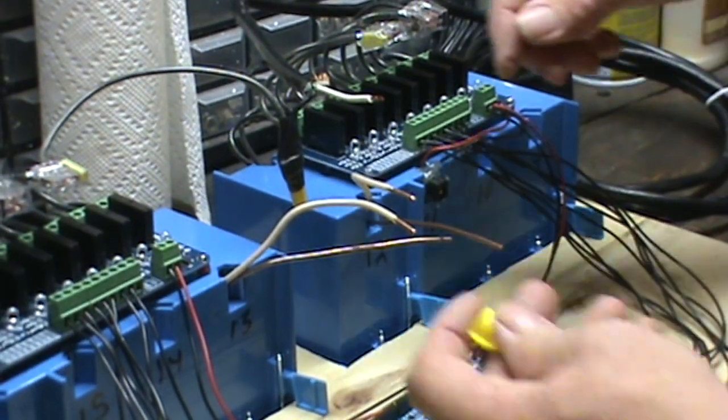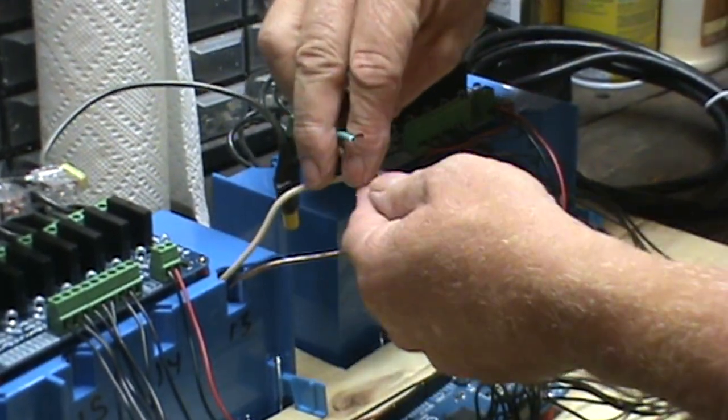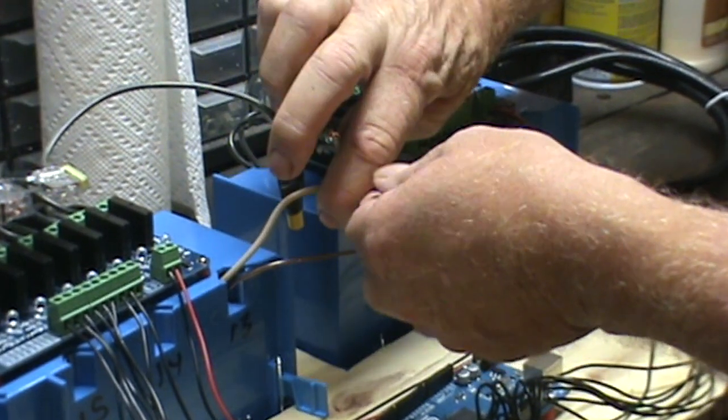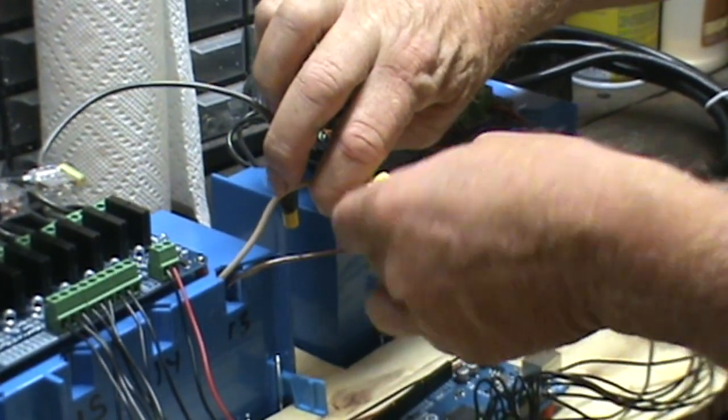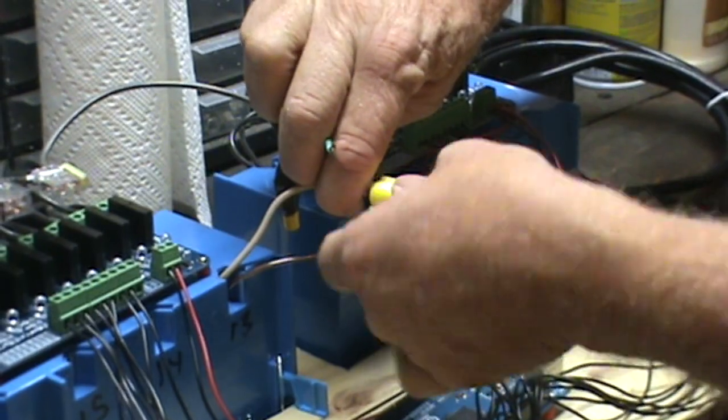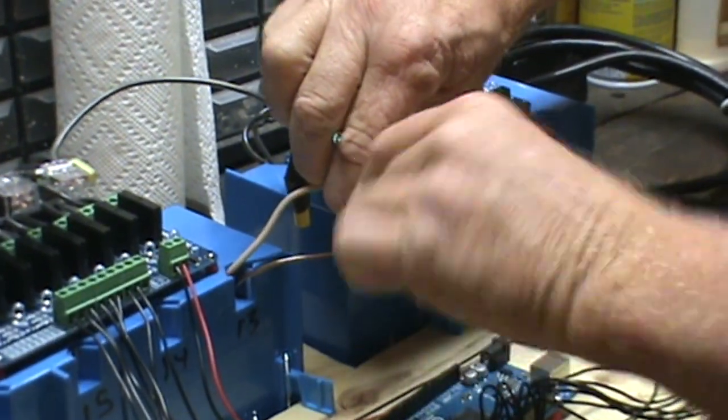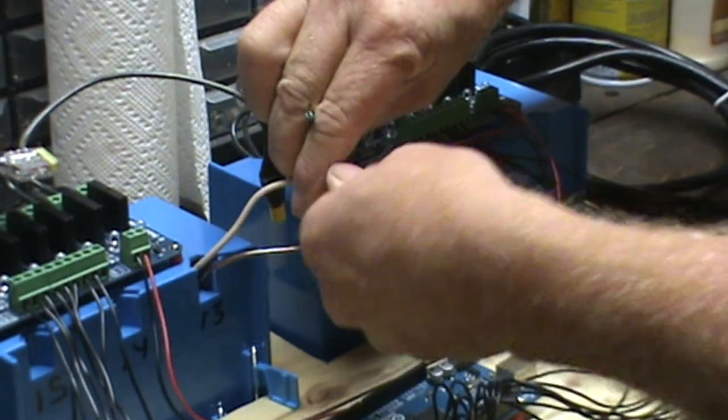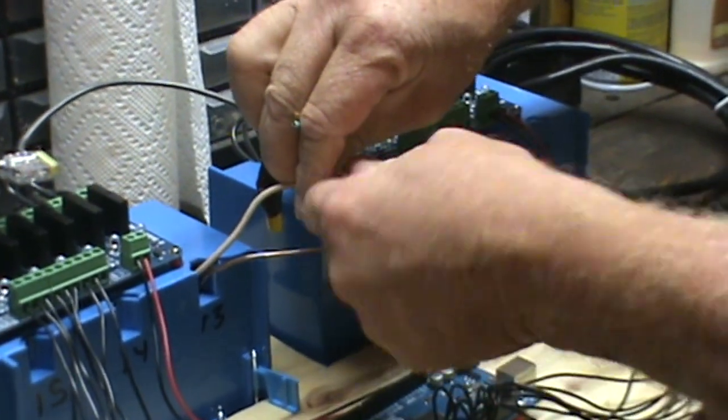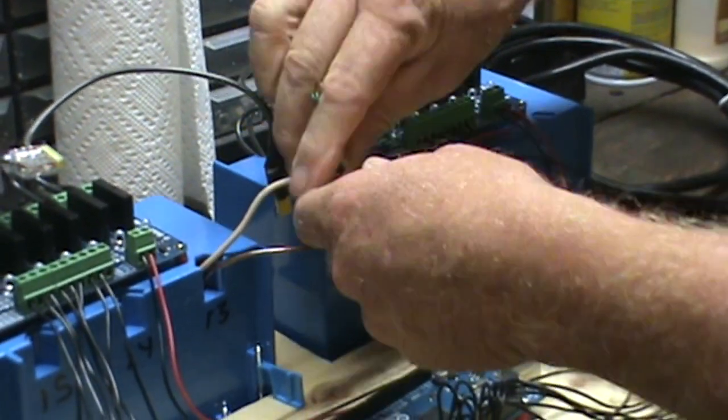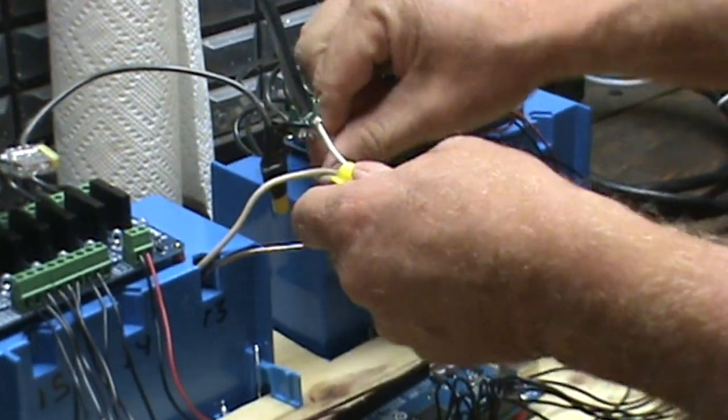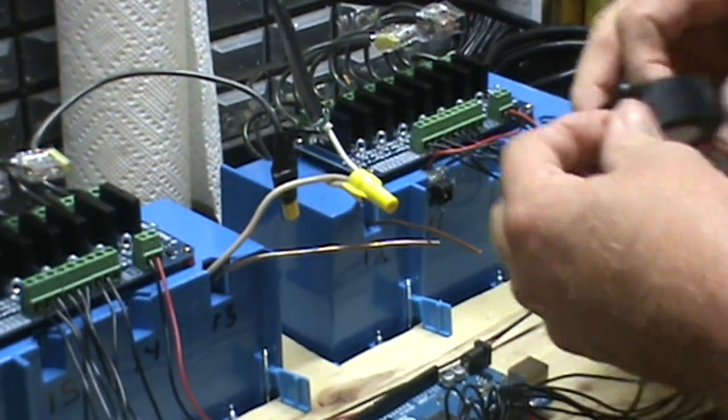Now we'll connect the white wires together the same way. Give them a tug, make sure that they're not coming out, and tape them up.